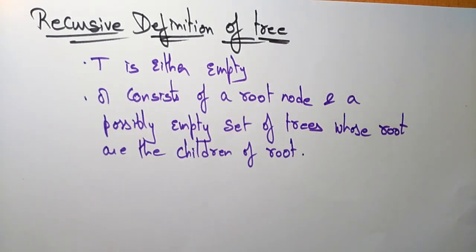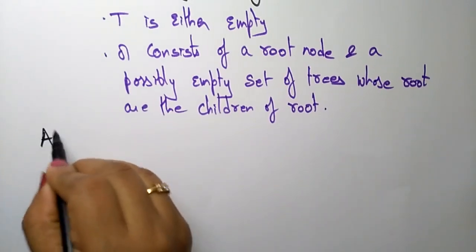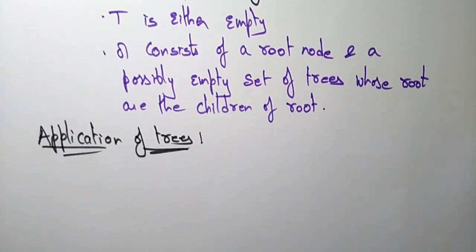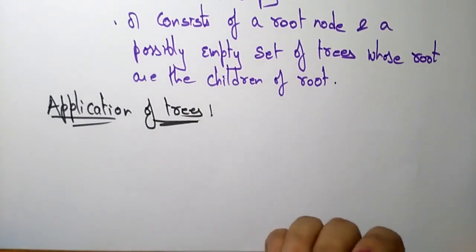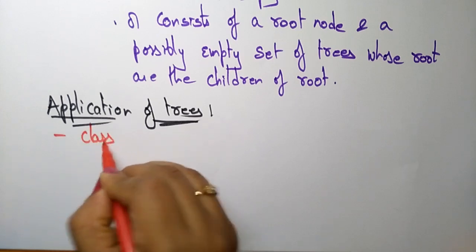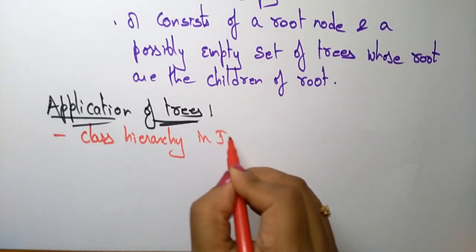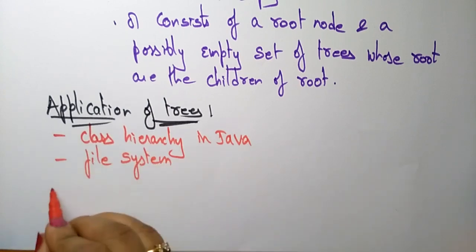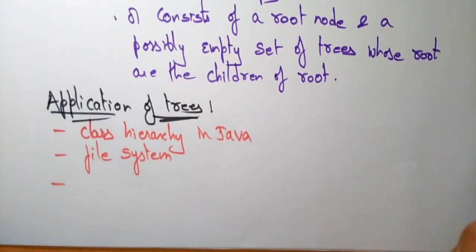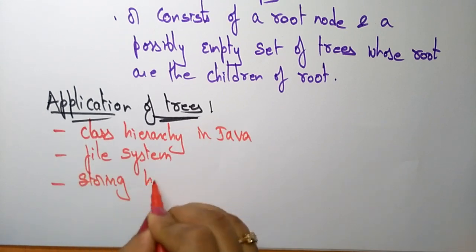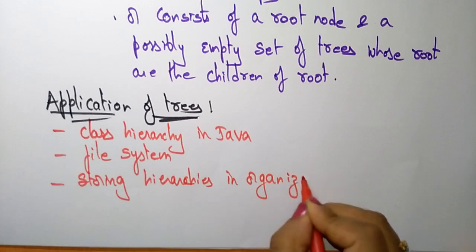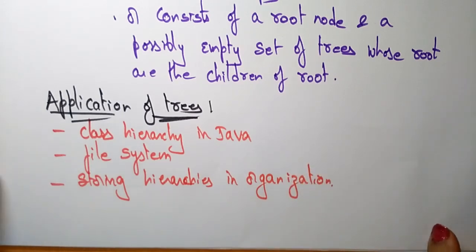This is a recursive definition of the tree. Now let us see the different applications of trees — in which areas we will use the tree concept. We can use trees in the class hierarchy in Java, in file systems, and for storing hierarchies in an organization. Mostly, for storing hierarchies of data in any field we will use the tree concept, where searching and everything will be easy.